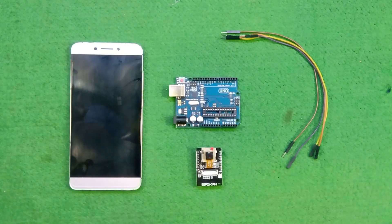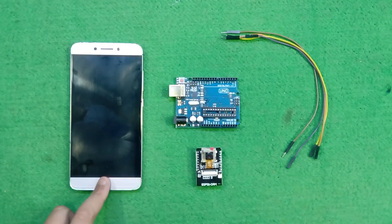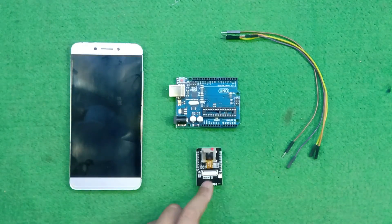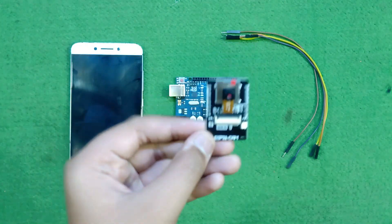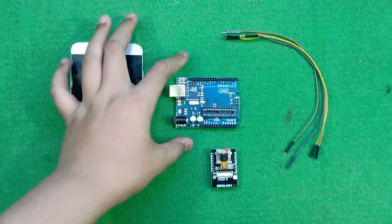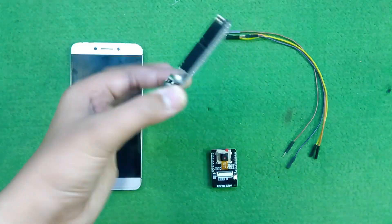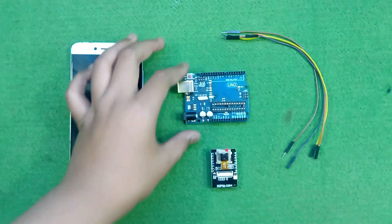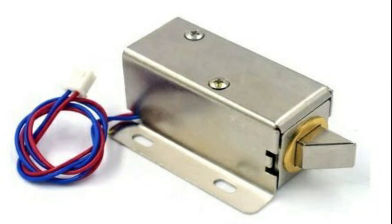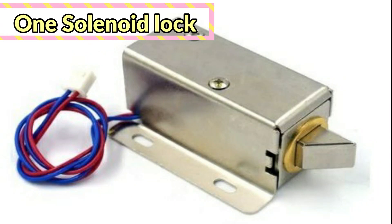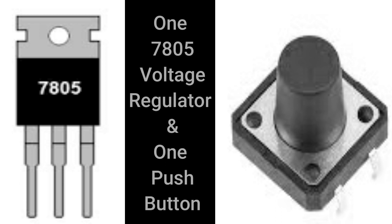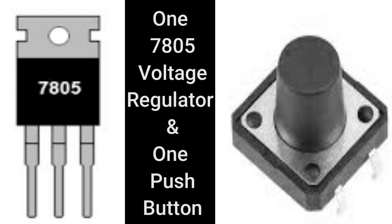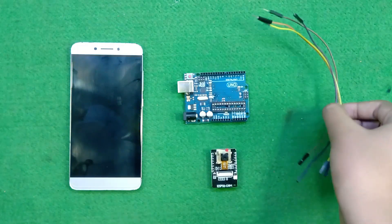Hello friends, for making this project we need just only a few things: one smartphone, one ESP32 cam, one Arduino Uno for programming this ESP32 cam, and some jumper wires.